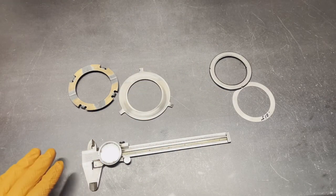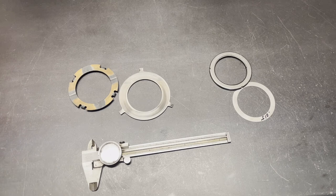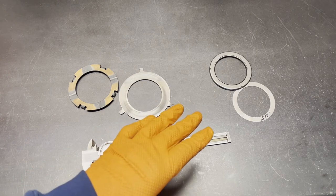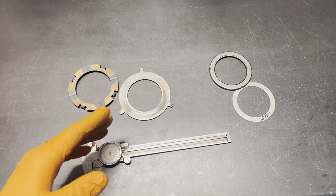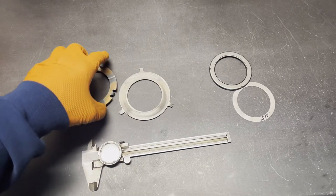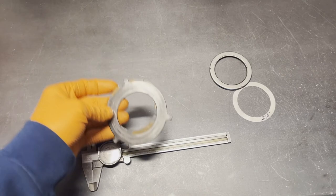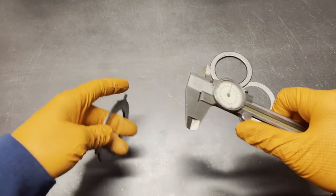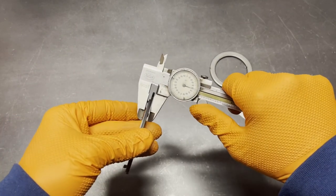For us to get an understanding of where we need to start, how many shims we need to add, and so that we can set our end play, what we want to do is take these two things and measure them and see how thick they are together.